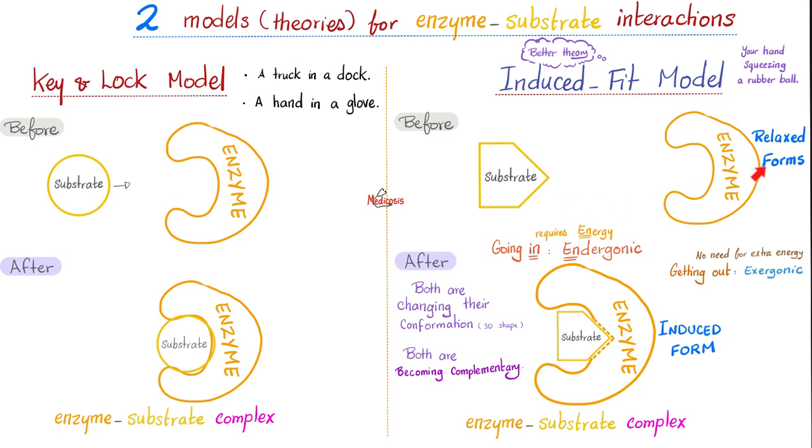Before binding, the enzyme was in the relaxed form, but after, it's in the induced form. And then, when the substrate leaves the enzyme, once again, the enzyme reverts back to the relaxed form. When the substrate is going in, it requires energy, therefore, it's endergonic reaction. Look at this. Going in requires energy, therefore, endergonic.